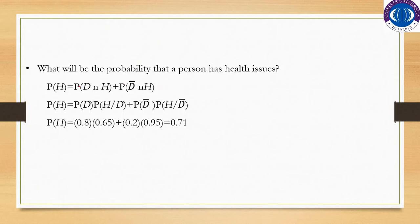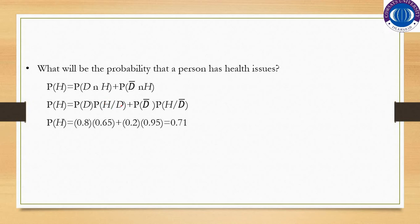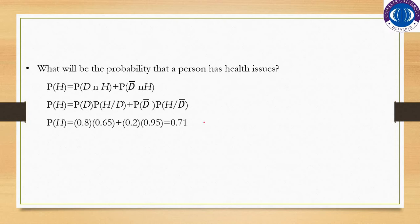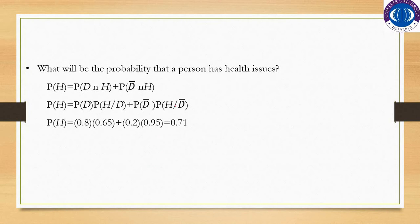We can use the Total Law of Probability: the person sees the doctor and has health issues, or the person does not see the doctor and has health issues. This equals 0.8 times 0.65, plus 0.2 times 0.95. The probability that a randomly selected person has health issues is therefore 0.71.